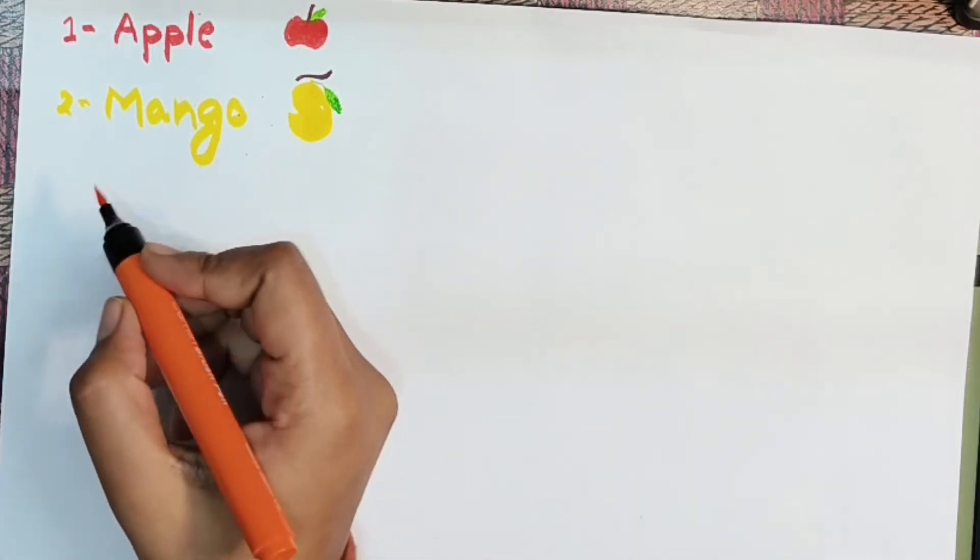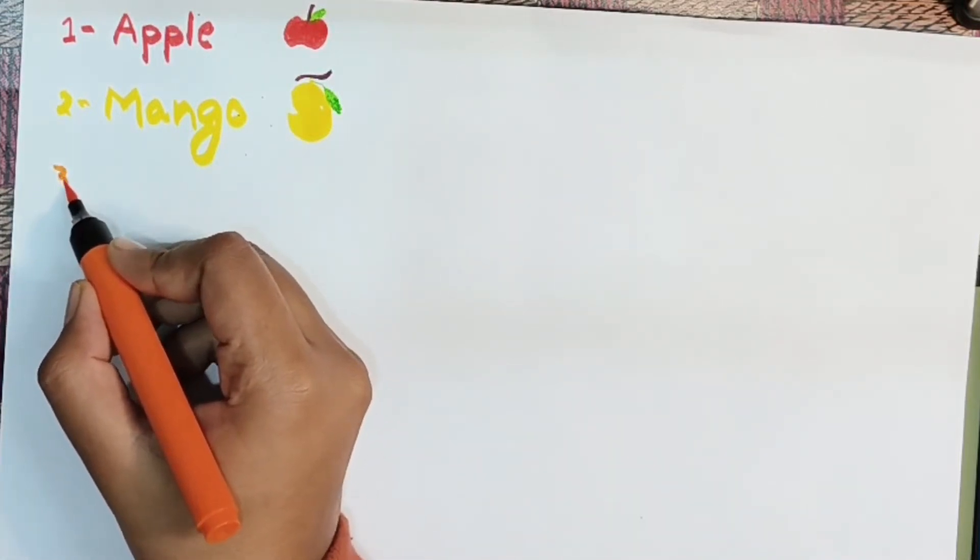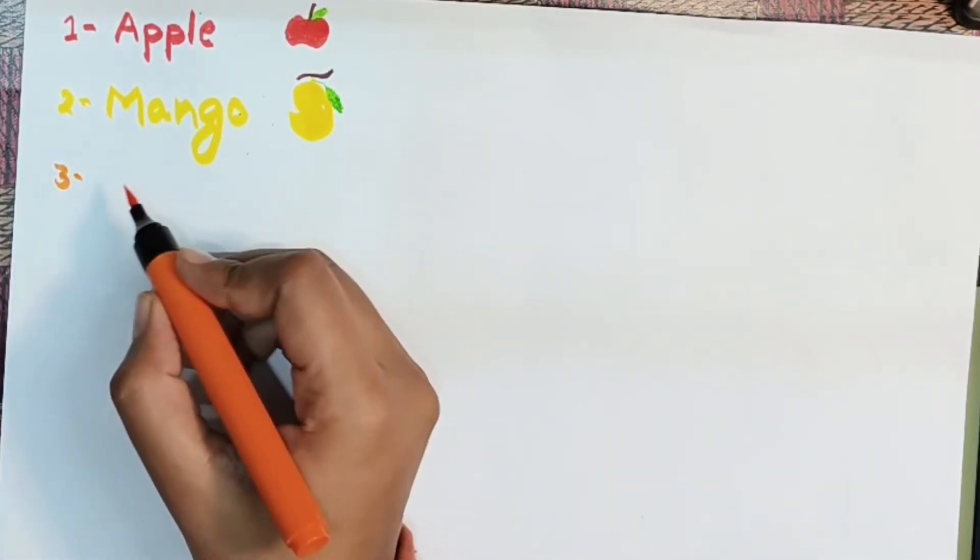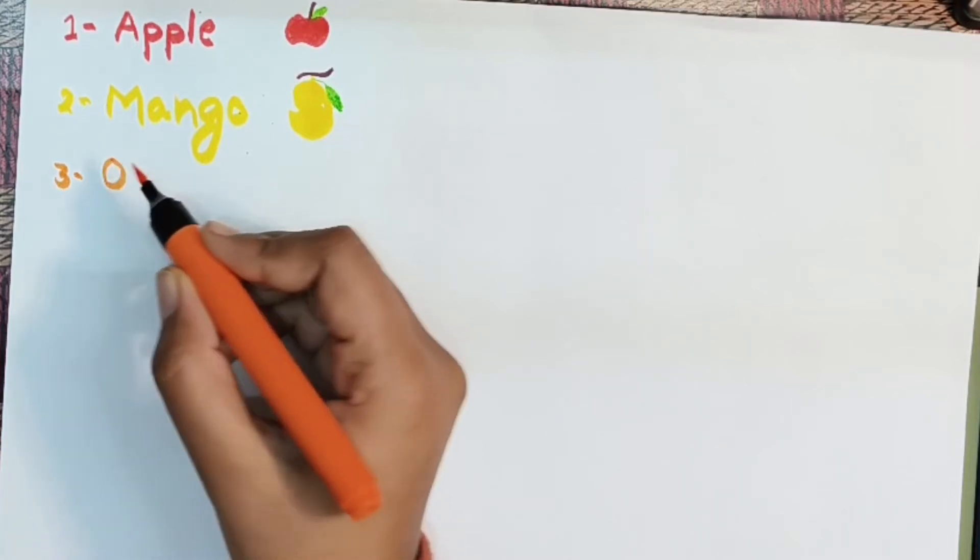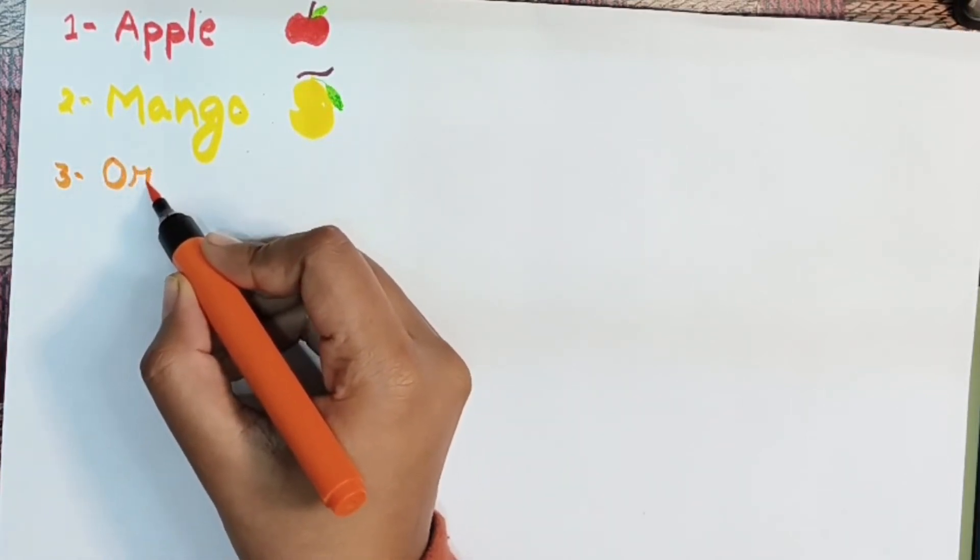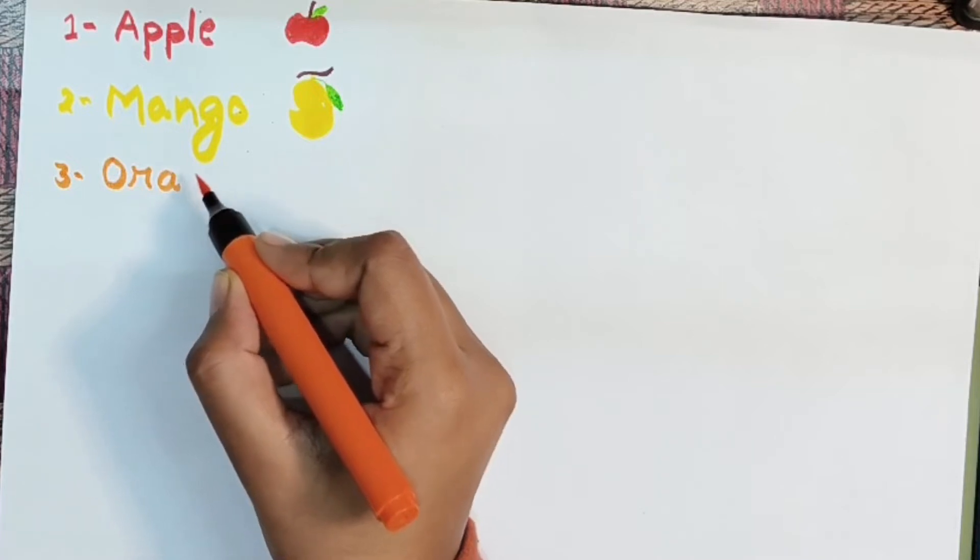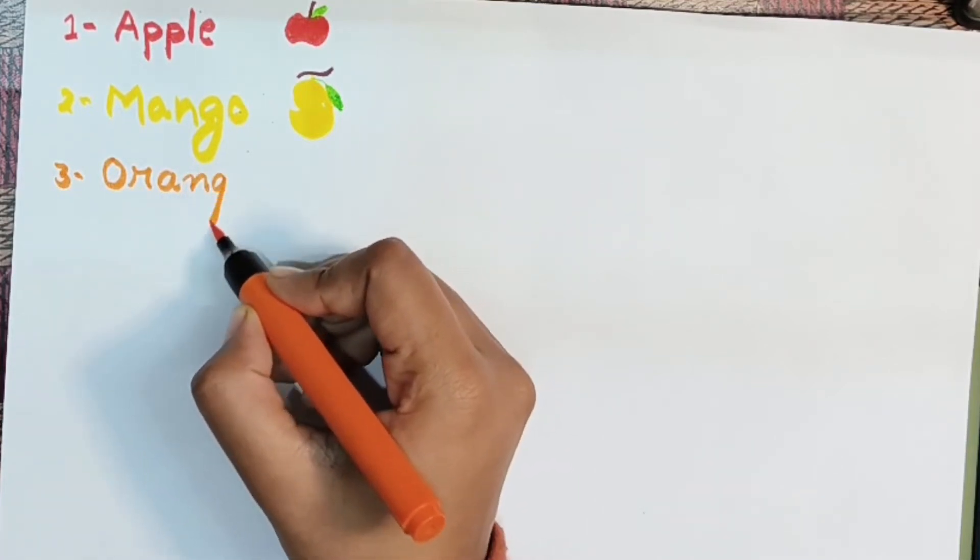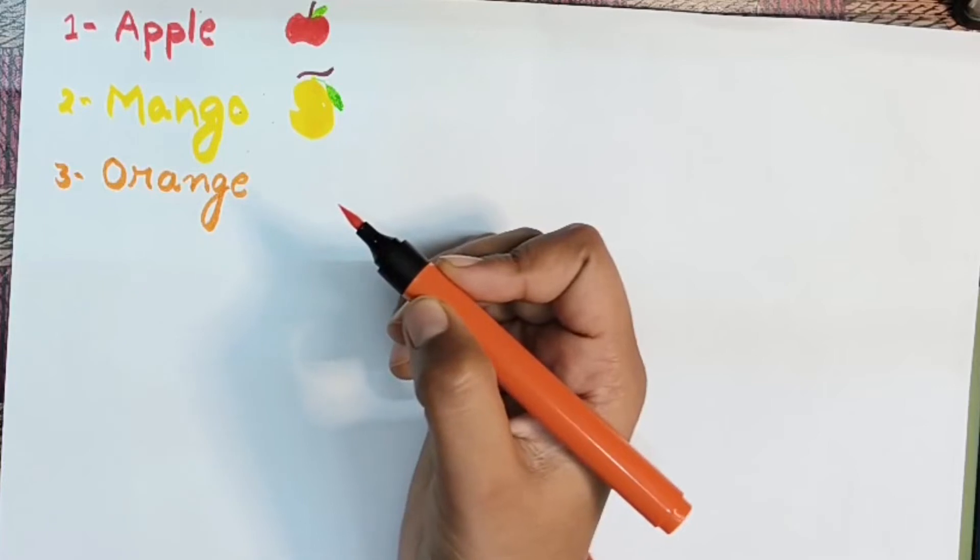Next is orange. Orange. The spelling of orange is O-R-A-N-G-E. Orange.